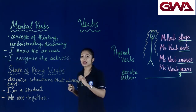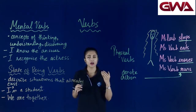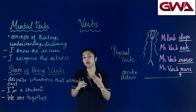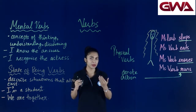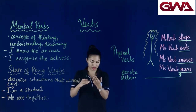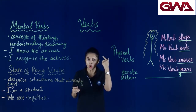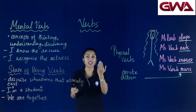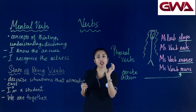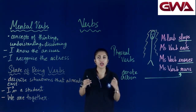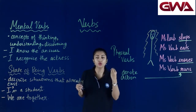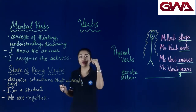आइए देखते हैं पहले example sentence को: I know the answer. तो knowing यह हमारा verb है। मैं exam दे रही हूँ, मैंने question paper देखा, और I know — मैं जानती हूँ — कि मुझे सारे answers आते हैं। तो यहाँ पर knowing कोई action नहीं denote करता, simply कुछ चीज जानने या understand करने को denote करता है। And therefore, they are mental verbs.